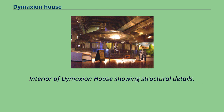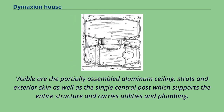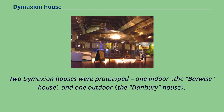The interior of the Dymaxion House shows structural details. Visible are the partially assembled aluminum ceiling, struts, and exterior skin, as well as the single central post which supports the entire structure and carries utilities and plumbing. Two Dymaxion Houses were prototyped — one indoor and one outdoor.